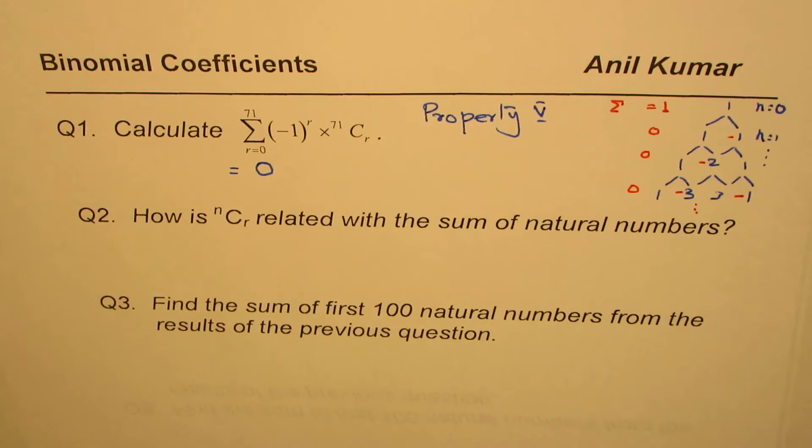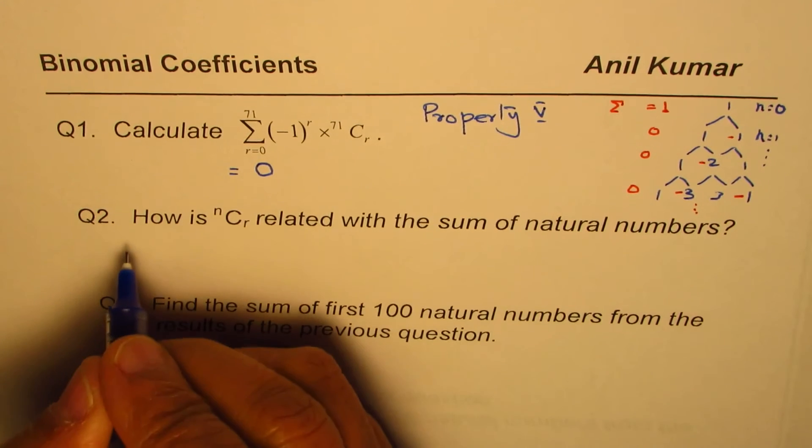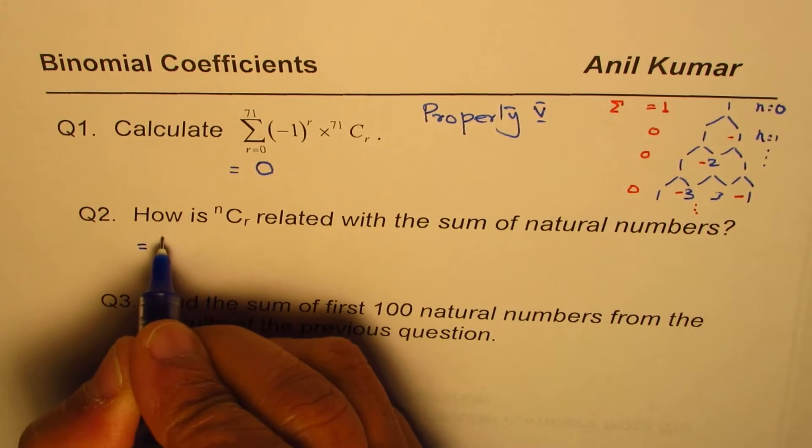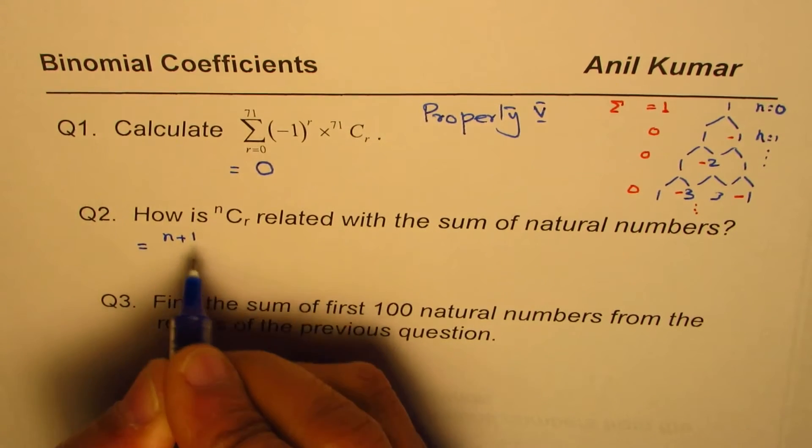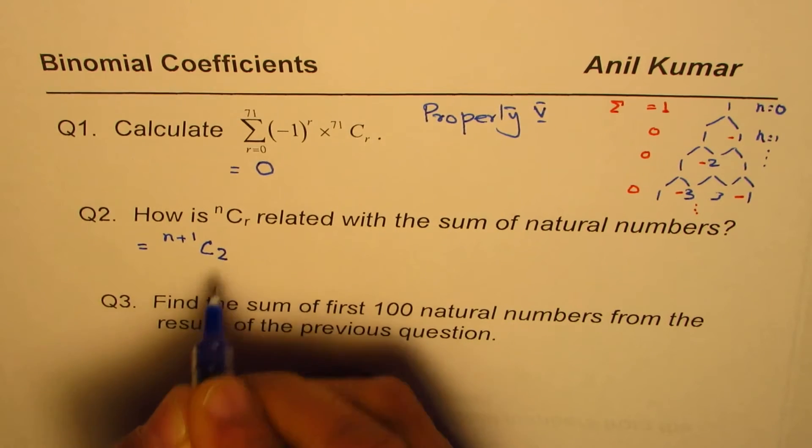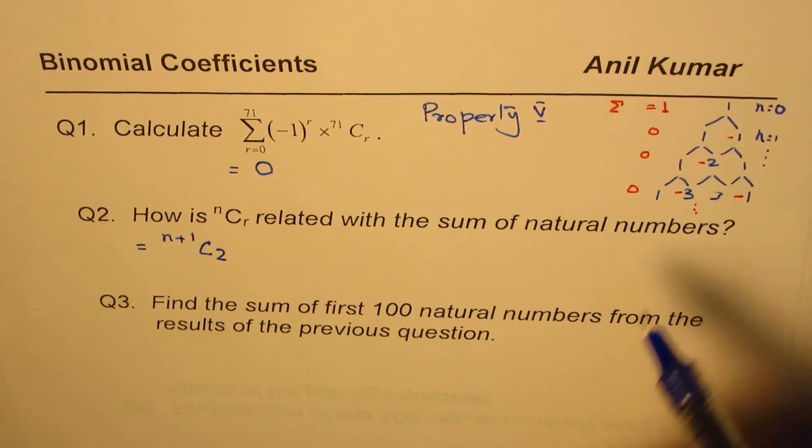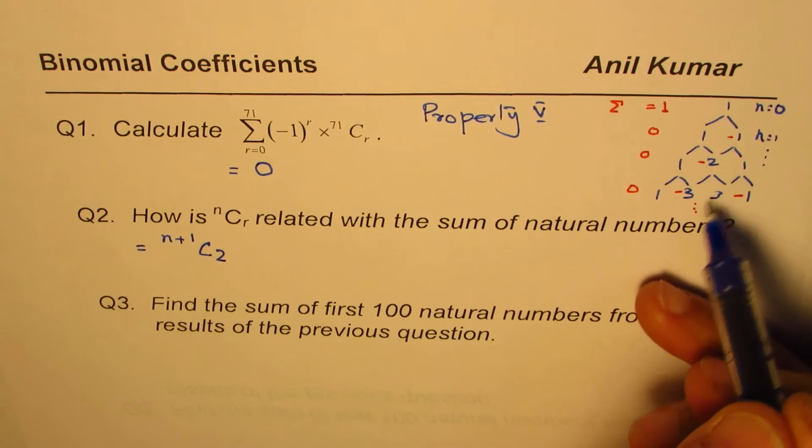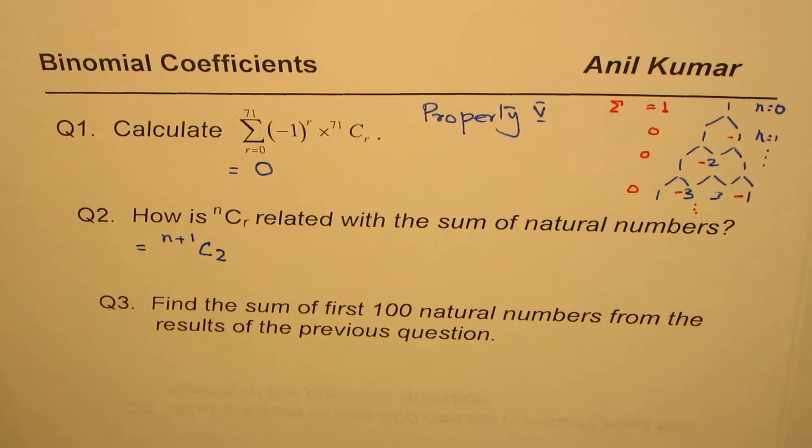Question number 2 is, how is nCr related with sum of natural numbers? So we know sum of natural numbers is indeed equals to n plus 1C2. So in this series, the third column actually gives you the sum of natural numbers.